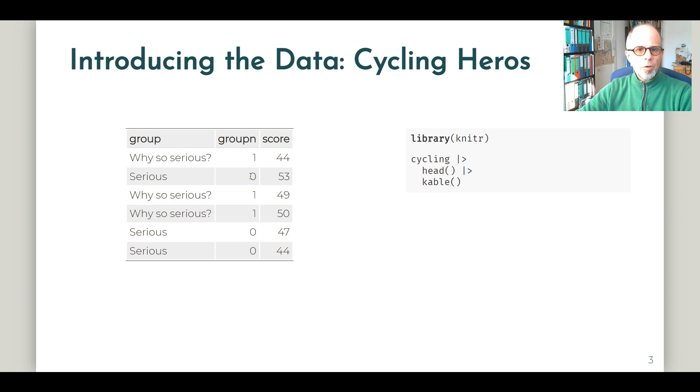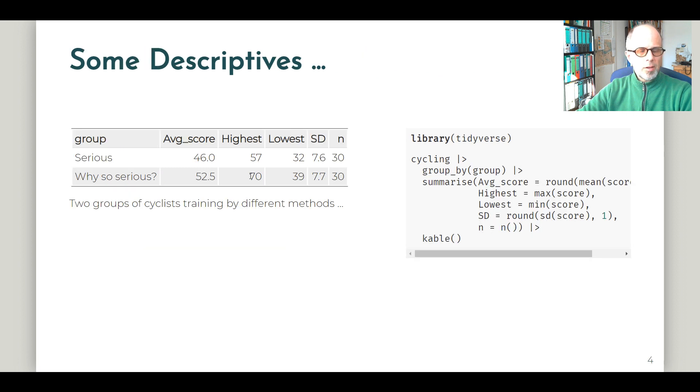So before we do the t-test, let's look at some descriptives of this data set. So the average score for the serious group is 46 points, and the average score for the why so serious group is 52.5 points. So the why so serious group seems to be more successful in their performance. We also see the highest and lowest values in each group. And fortunately, the standard deviations are almost the same. So that's a good sign. And the ends are the same in the two groups, 30 cyclists in each group.